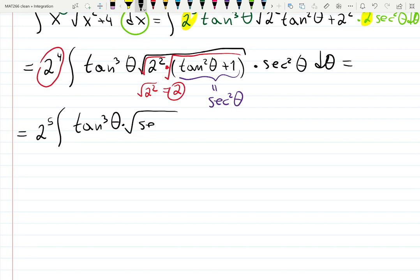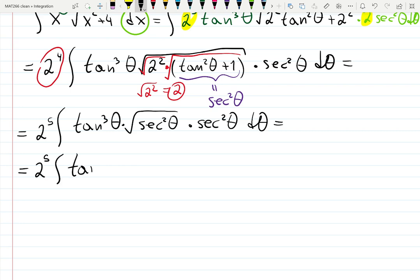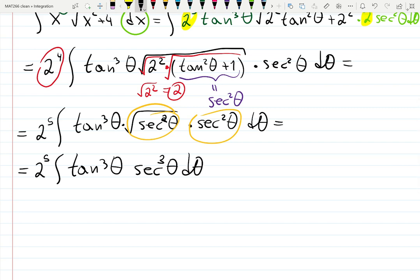So now I have the square root of secant squared theta times secant squared theta d theta. The square root and the square cancel each other — they are inverse functions — so tangent cubed theta times the square root of secant squared gives just secant theta. Then secant theta times secant squared gives secant cubed d theta.